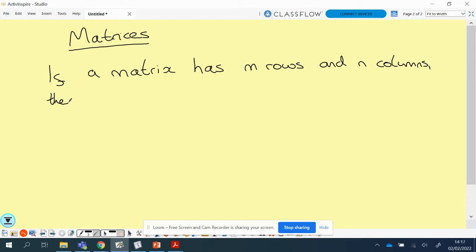Then the order, which basically means the size of the matrix, is said to be m times n. So how do we determine the size of a matrix? It's the amount of rows it has by the amount of columns it has.